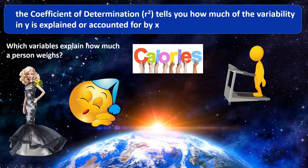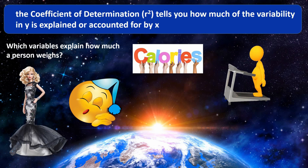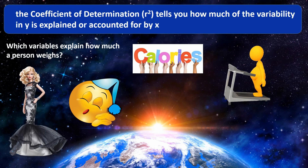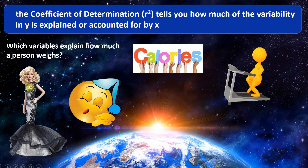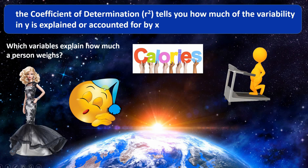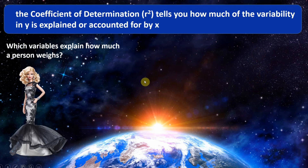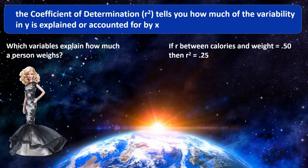So clearly many variables can help explain or account for somebody's weight. But in this video we're looking at simple correlation — only two variables at a time. So let's look at just one of these variables — sleep, calories, or exercise — and ask: how much of the variability in Y (weight scores) is explained by X? In this case we're going to try to explain weight by looking at calories.